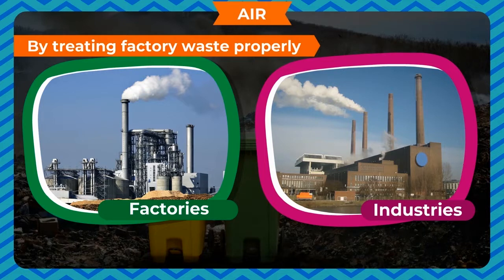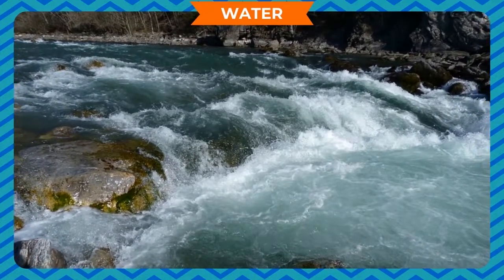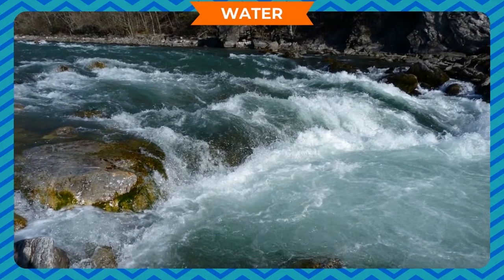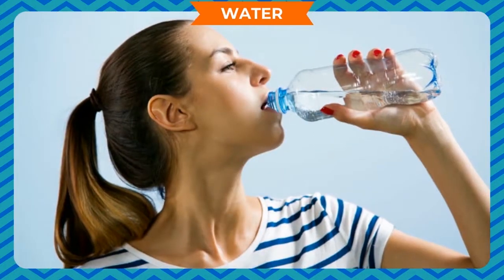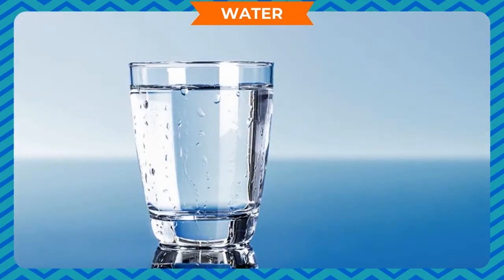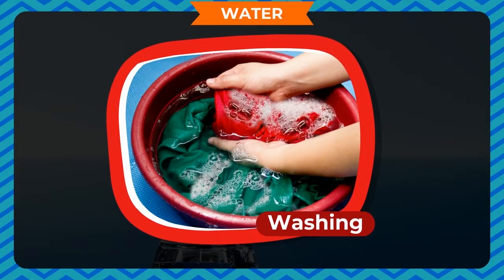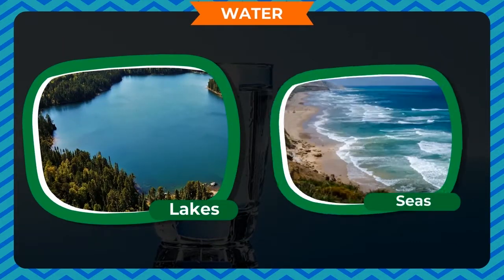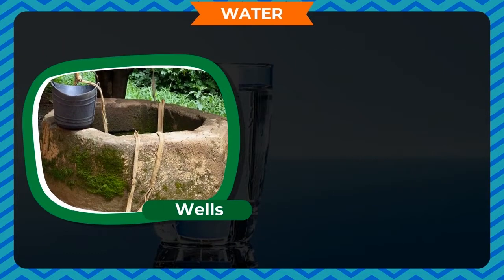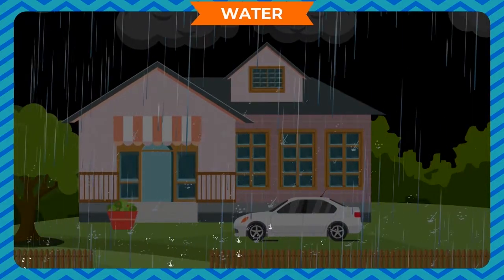The government has also made strict rules for this. Water, like air, is also needed by all living things. Life is not possible without it. We use water in many ways such as for drinking, cleaning, washing, etc. The important sources of water are lakes, seas, wells, ponds, rivers, etc. Rain is the main source of water.